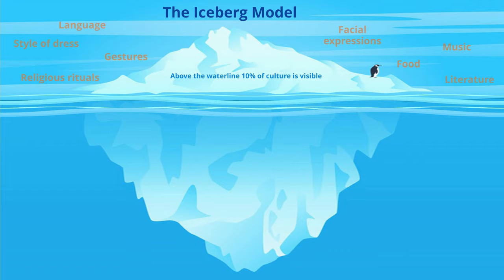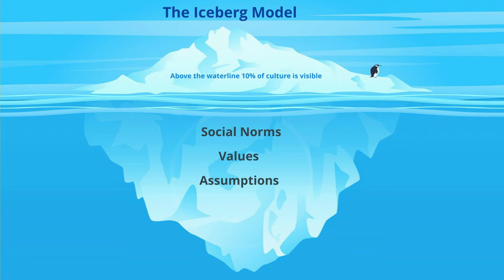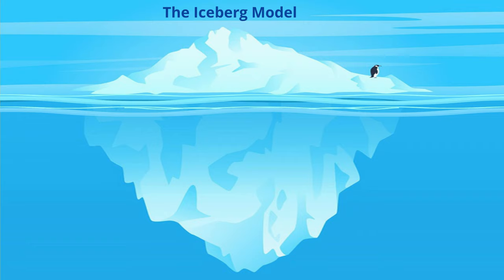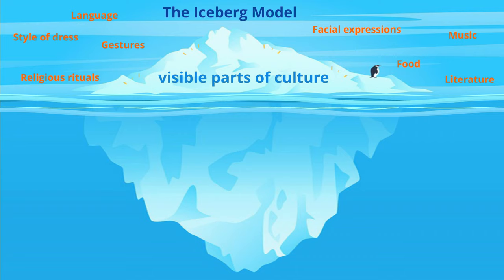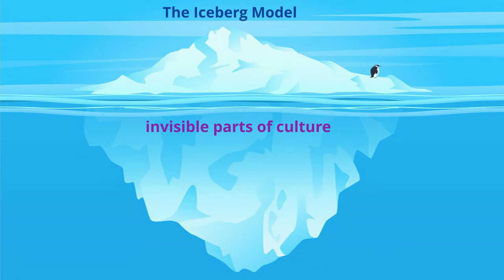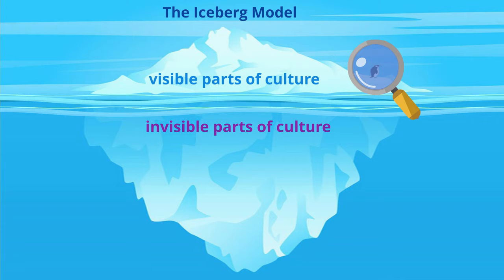The social norms, the values, the basic assumptions about space and time and the concept of justice and of self. The iceberg model of culture implies that the visible parts of culture are just expressions of the invisible parts. It highlights the difficulty of understanding people from different cultural backgrounds, because although we see what's above the waterline, we cannot immediately realise what the foundations are.